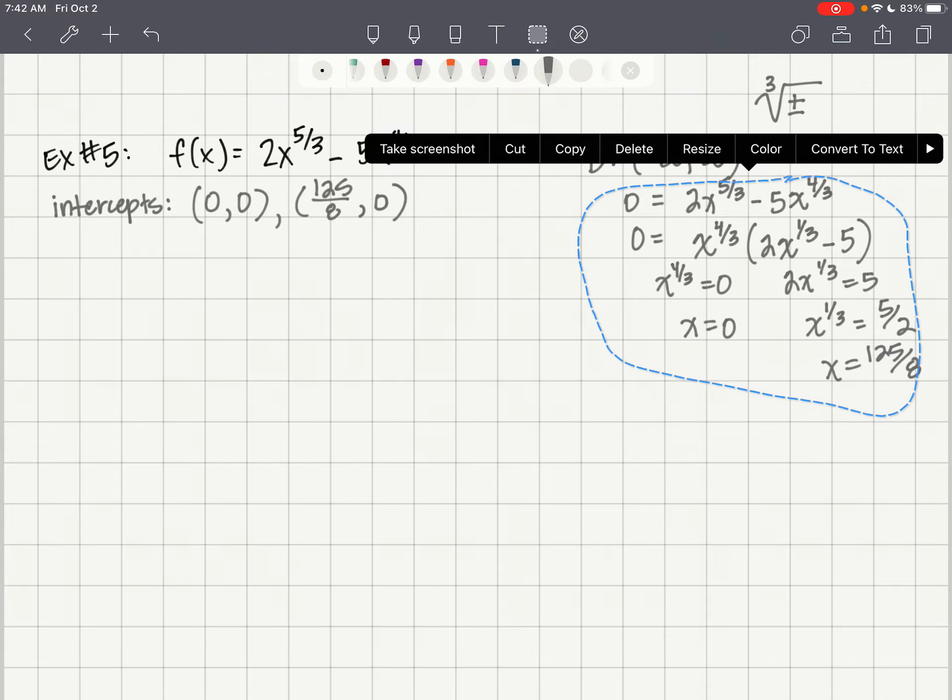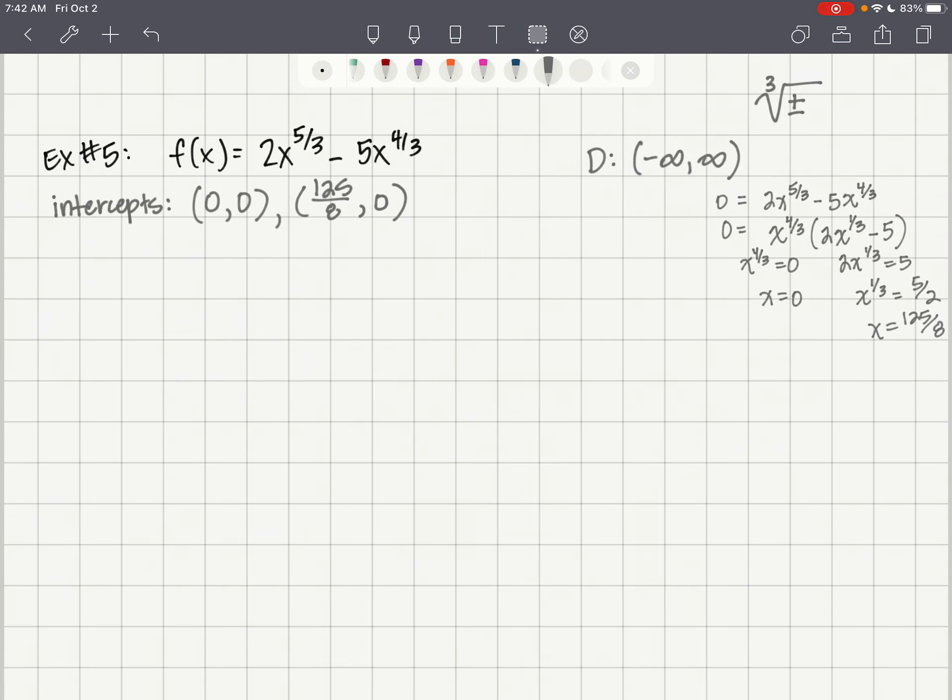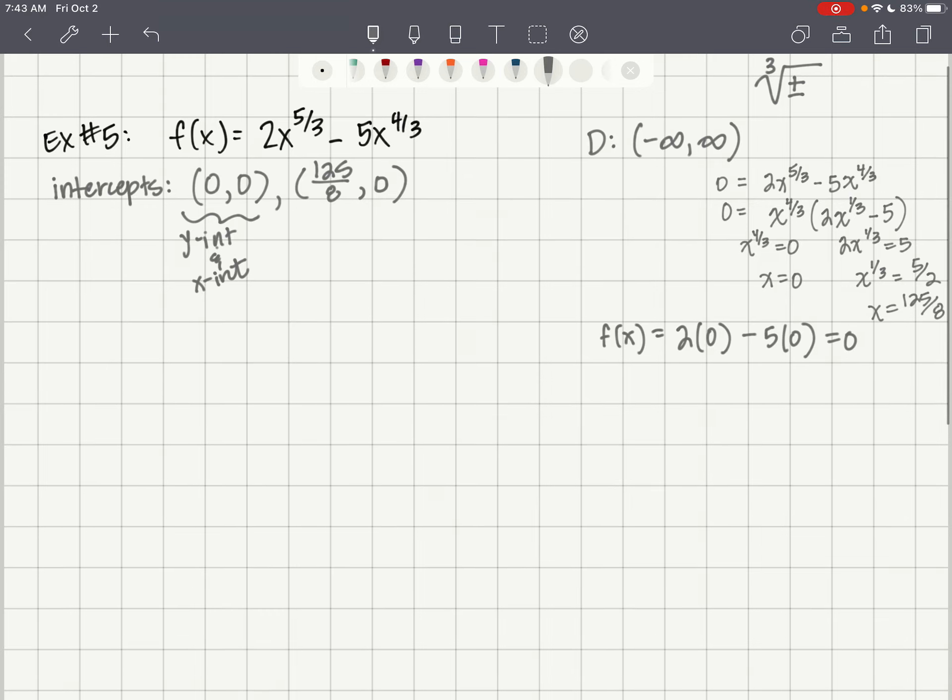I'm going to just make this a little bit smaller and put it off to the side. Then we need to find our y-intercept, which is when we put a zero in for x. So 2 times 0 minus 5 times 0, that is 0, no surprise, because this is a y-intercept and an x-intercept. There's no asymptotes because we have a continuous function. Therefore, we're ready to start on our first derivative.